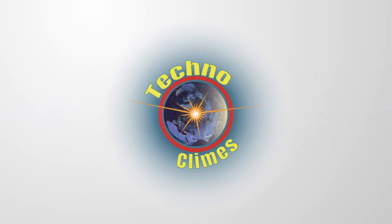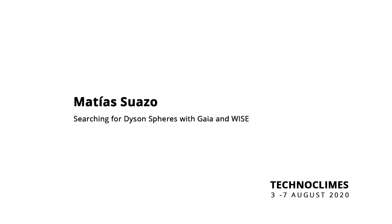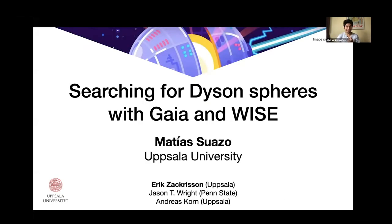And with that, let us get prepared for the next talk by Matthias Sazo, if I have pronounced that correctly, searching for Dyson spheres with Gaia and WISE. Okay, so hello everybody. My name is Matthias Sazo. I am a first year PhD student in astronomy at Sala University in Sweden. But I'm new in the field of study, but I'm looking forward to learning more about the field. And today I'm going to present my first project for my PhD, what is about assessing upper limits on the prevalence of Dyson spheres in the Milky Way using Gaia and WISE.